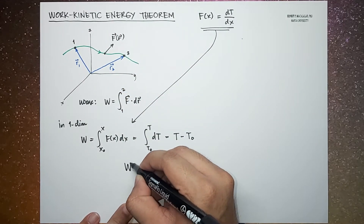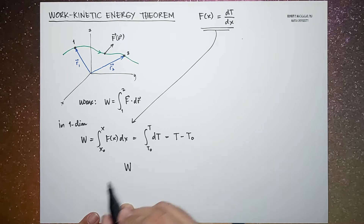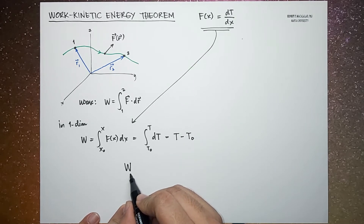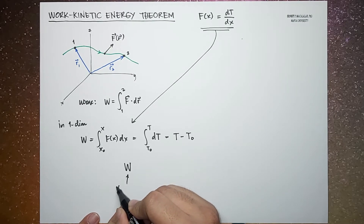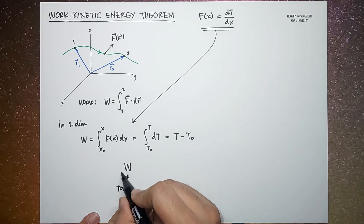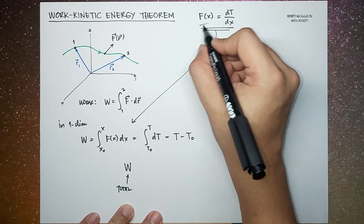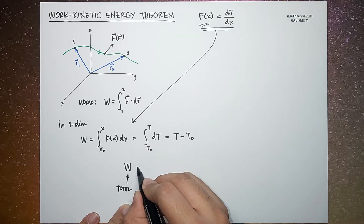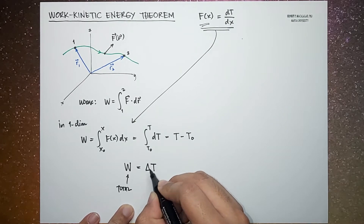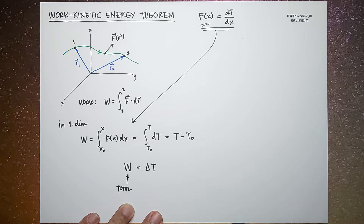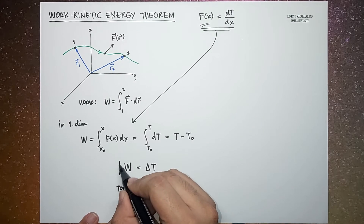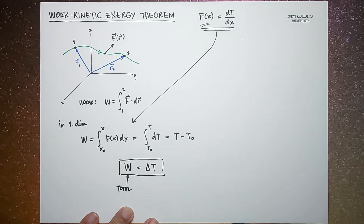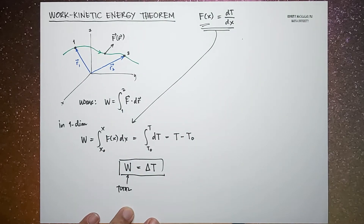The work done on a particle — specifically the total work done due to the net force — is equal to the change in kinetic energy of the particle. This relationship directly relates the work done to the change in kinetic energy.